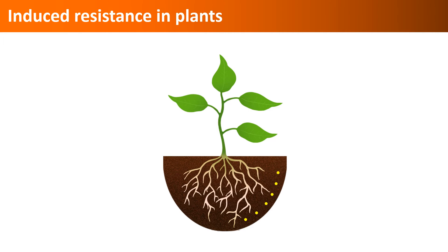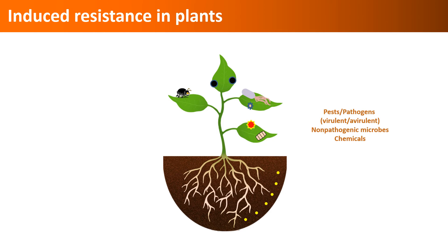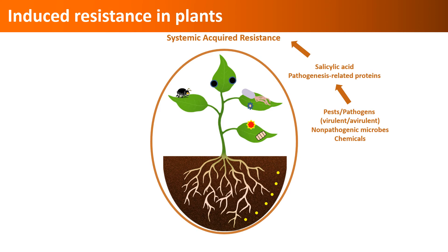Now let us look at induced resistance in plants and how pests or biostimulants play a role in this. When plants are exposed to pests, virulent or avirulent pathogens, non-pathogenic microorganisms, and some chemicals, plant defenses involving the production of salicylic acid and pathogenesis-related proteins are triggered, and this mechanism of resistance is called systemic acquired resistance.